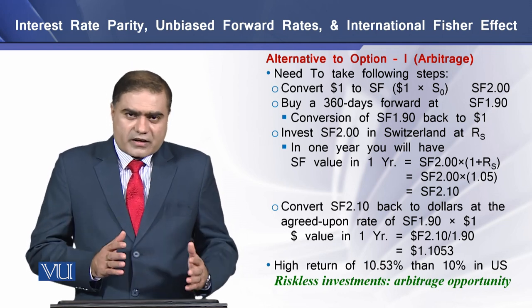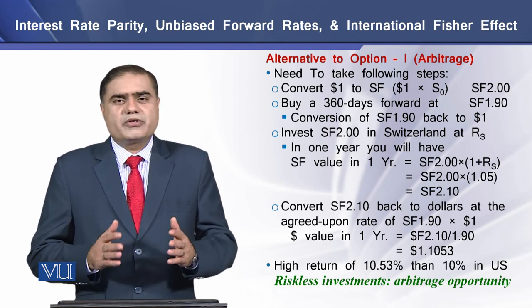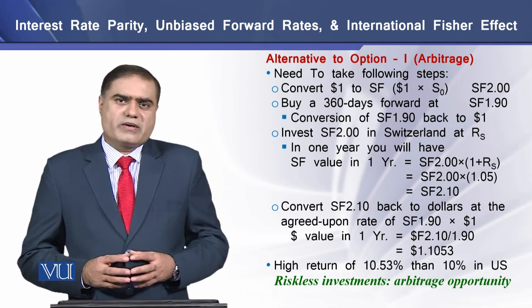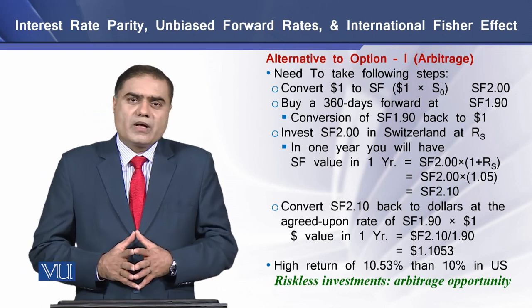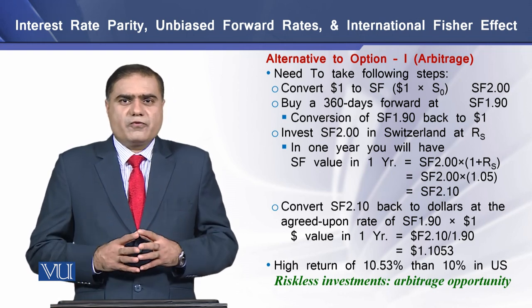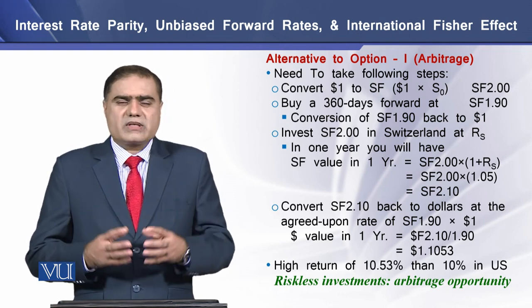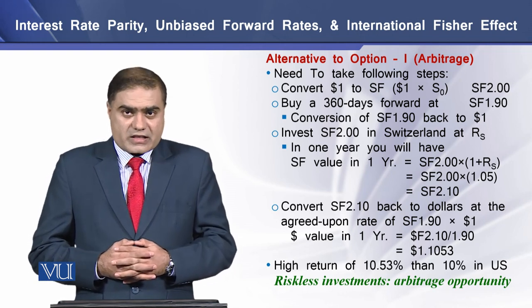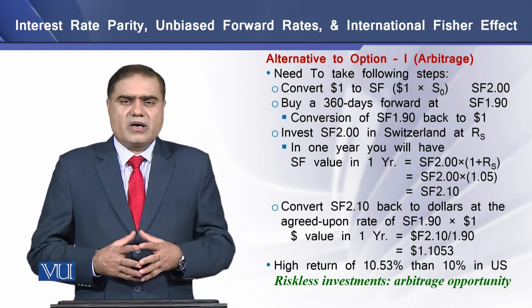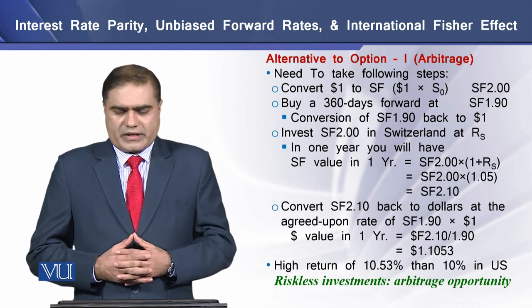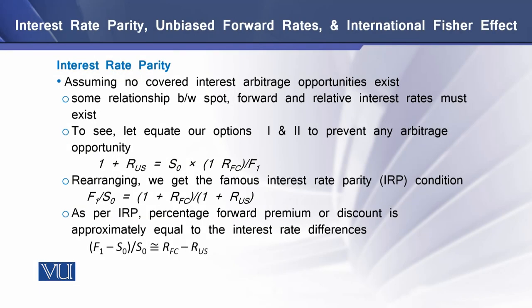In this way, we see that there is a difference, and that difference is higher than the return earned in the US risk-less investment. So we can conclude that if we have two risk-less investments, there exists some opportunity for an arbitrage transaction. Now let's talk about interest rate parity.